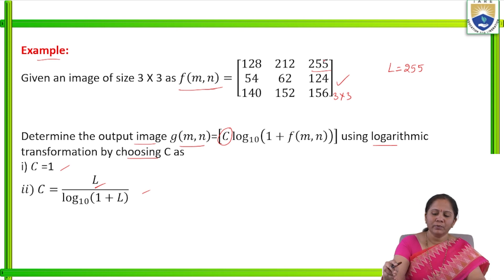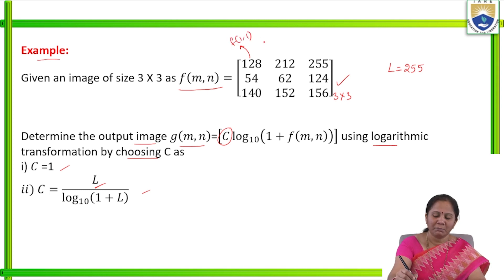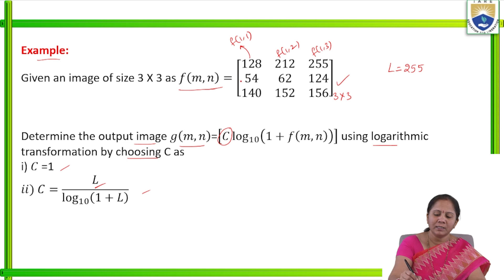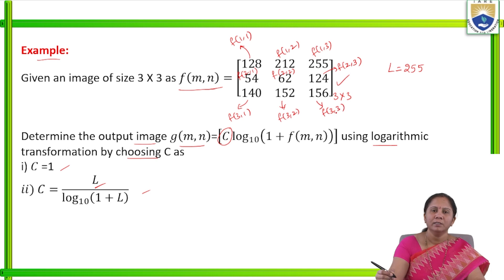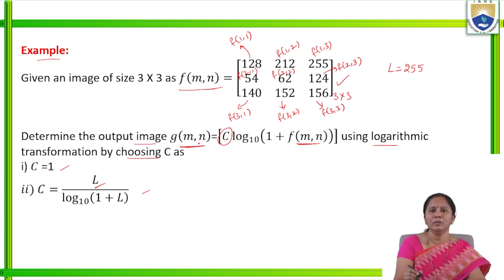From this example, we will consider each pixel as f(m, n). We can write them as f(1,1), f(1,2), f(1,3) for the first row; f(2,1), f(2,2), f(2,3) for the second row; and f(3,1), f(3,2), f(3,3) for the third row. These are the values we have to place in order to find the new output values of g(m, n). Let us do this problem.